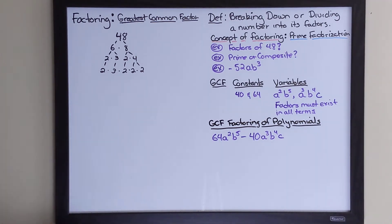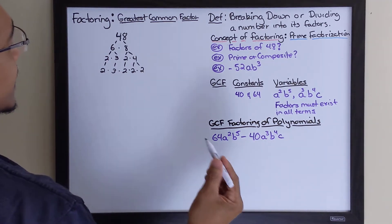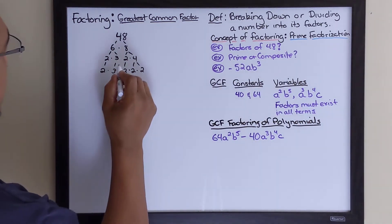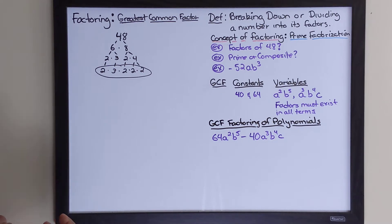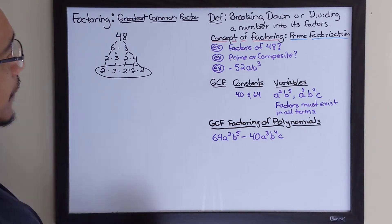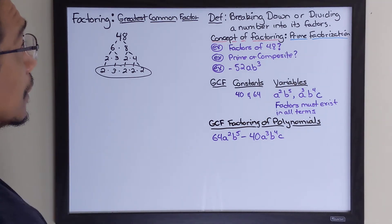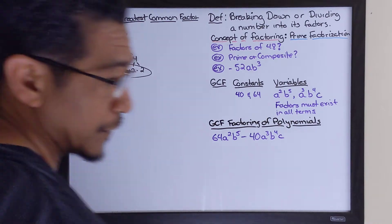So breaking down is the concept of factoring. Now let's look at what a prime and a composite number are. The numbers at the bottom of the factor tree are prime numbers — you really can't divide them with any number other than 1 or itself. A composite number, on the other hand, can be divided by numbers other than 1 or itself.